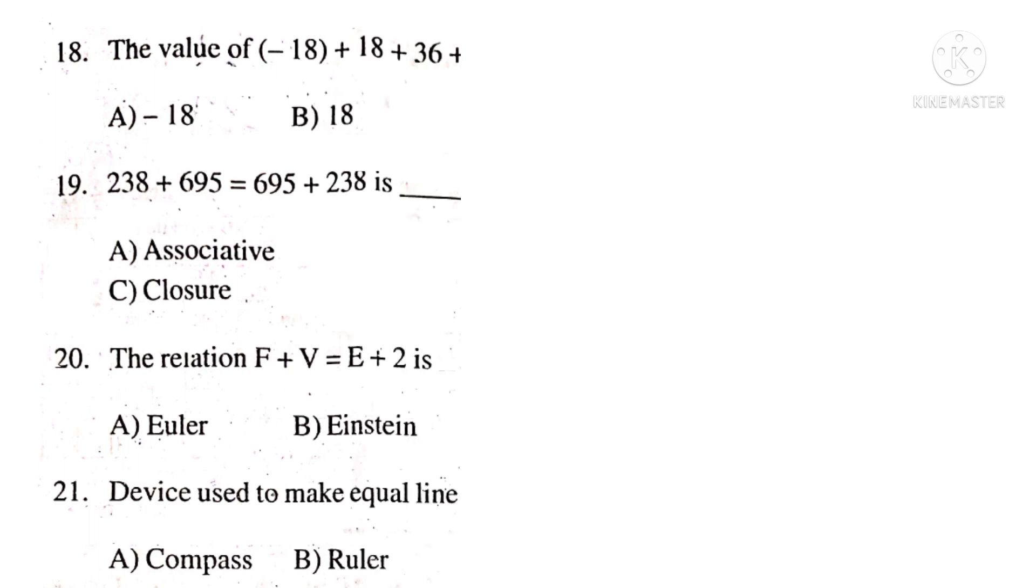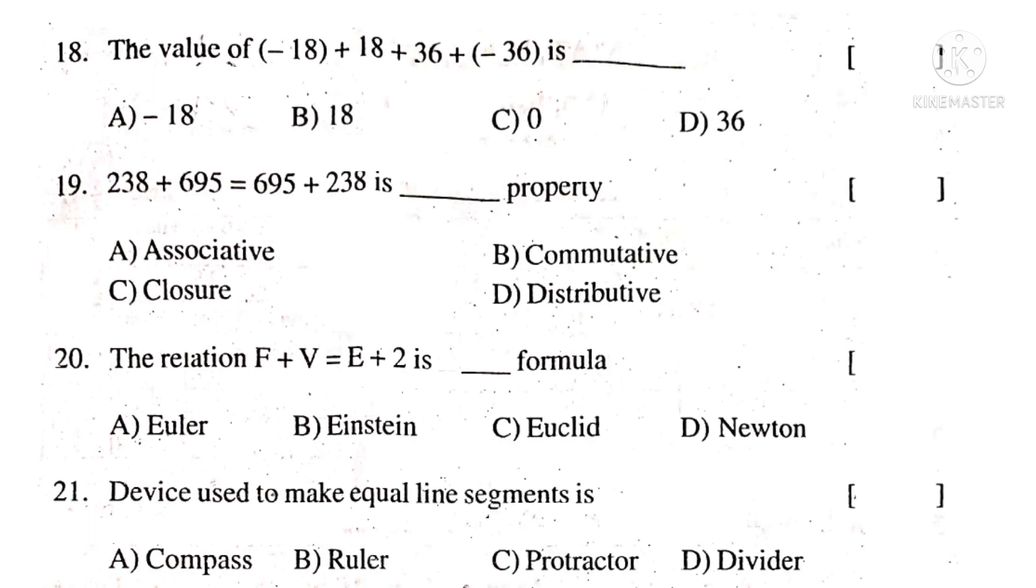Now let us take 18th question. The value of minus 18 plus 18 plus 36 plus half minus 36 is dash. Observe that minus 18 plus 18 becomes 0. 36 minus 36 also 0. So 0 plus 0 is 0. So the correct choice is C.